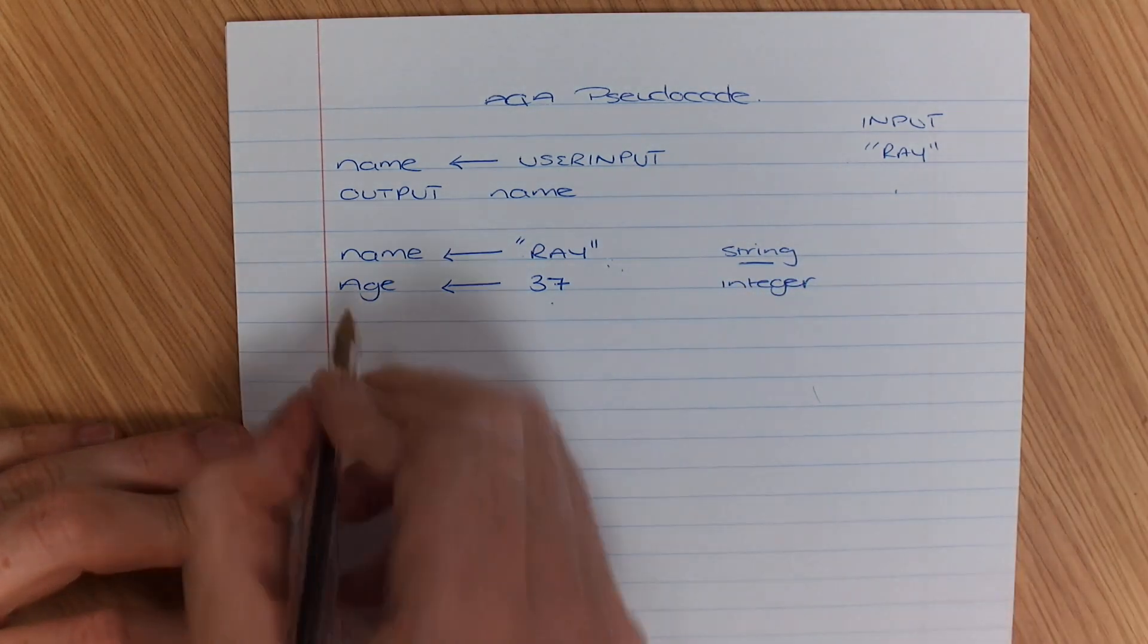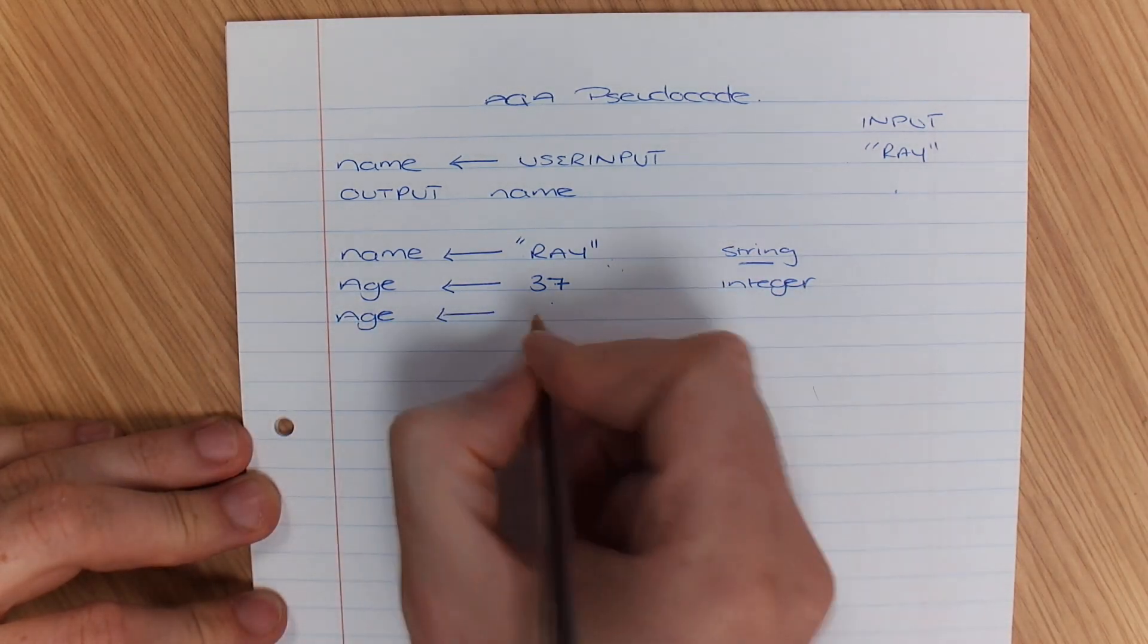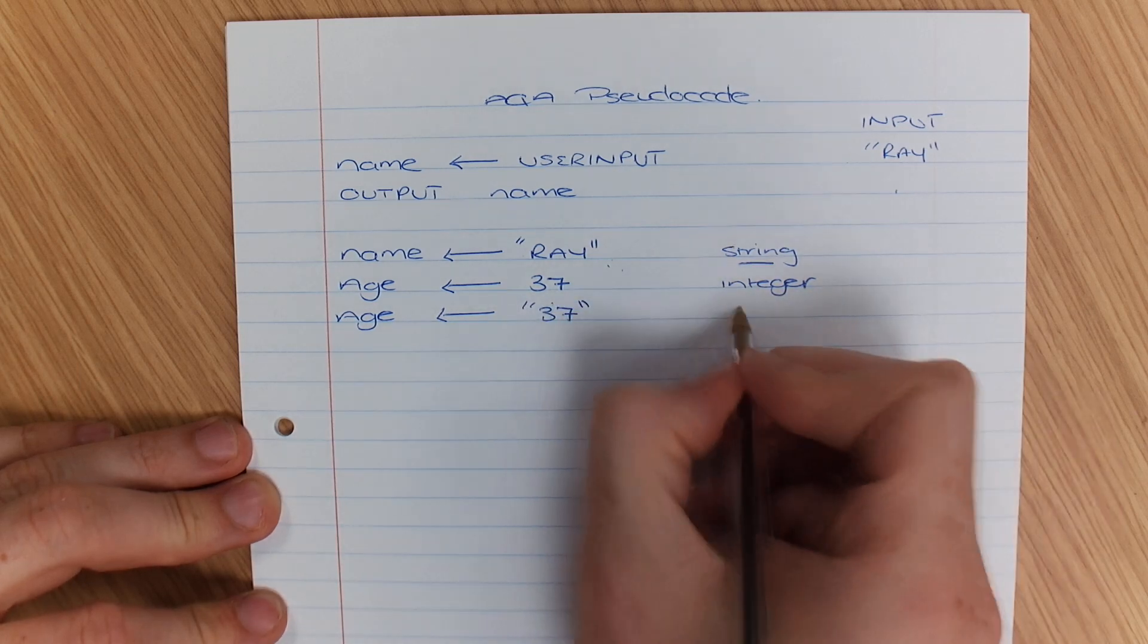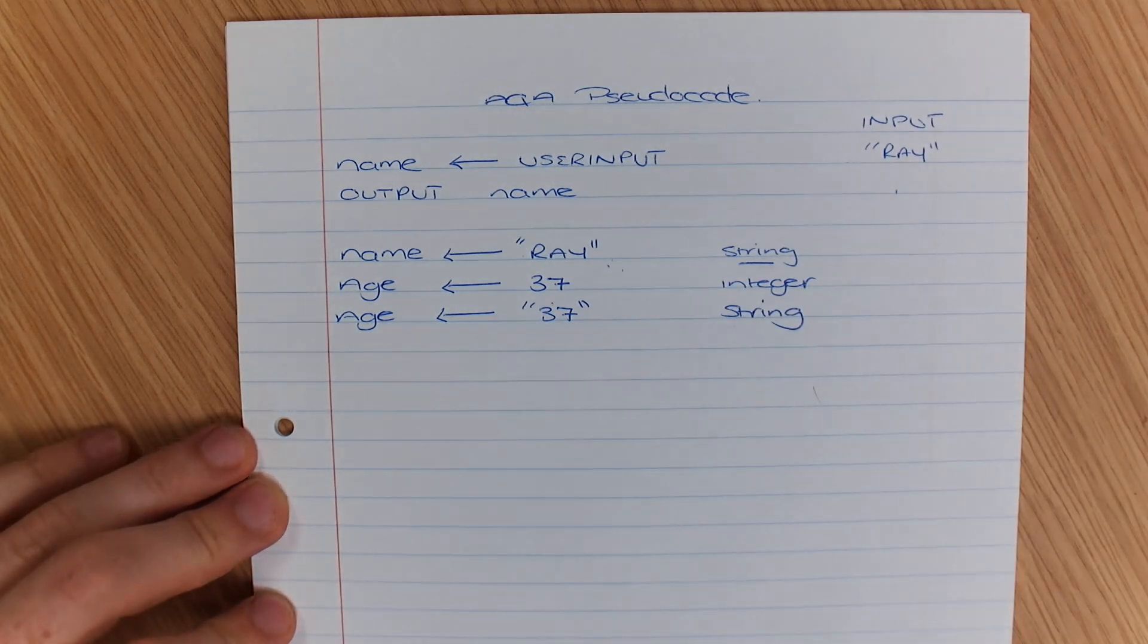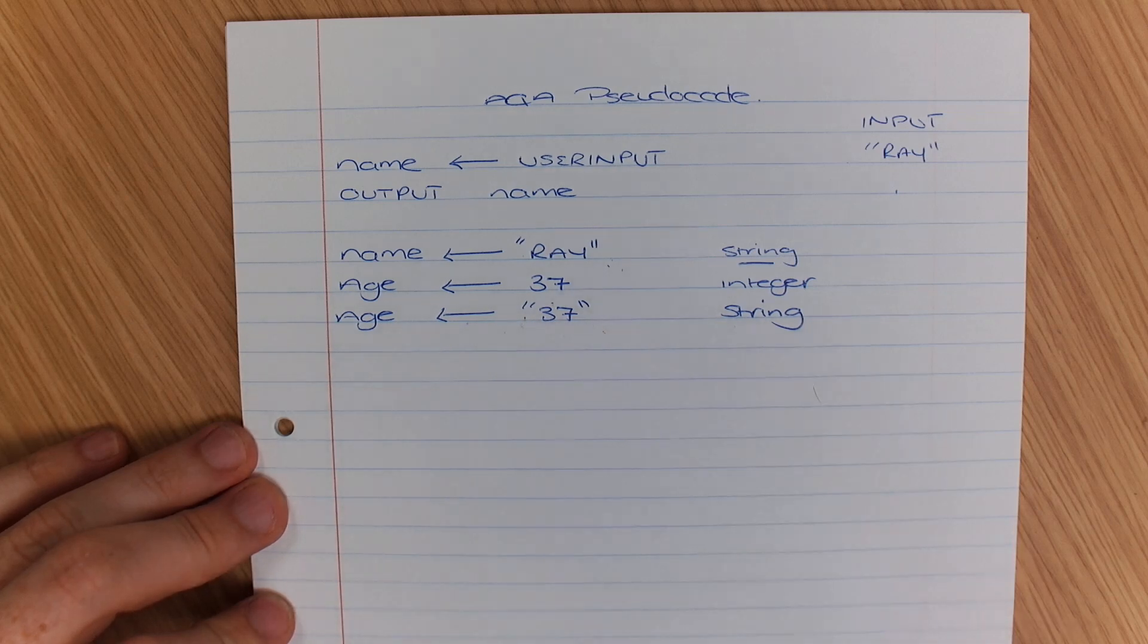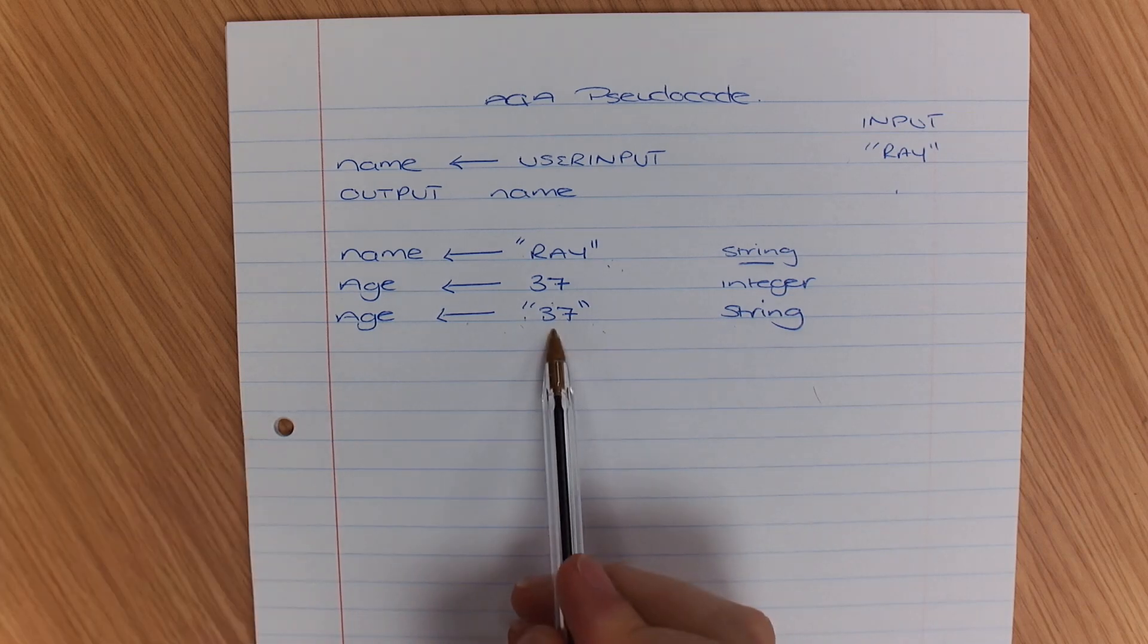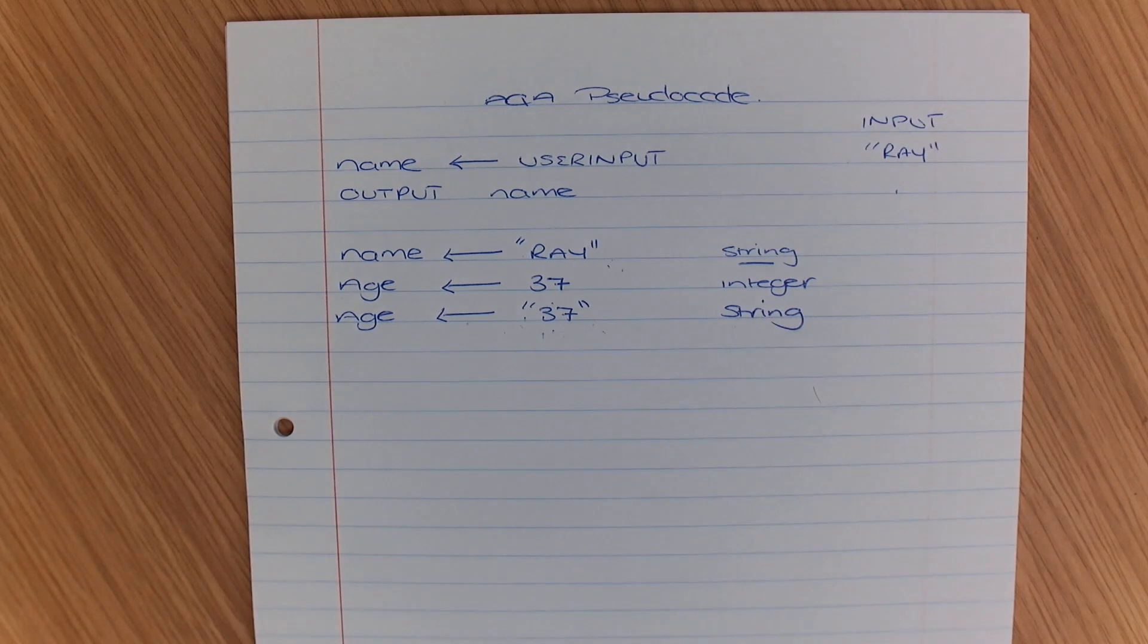Following on from that, if I decided I wanted age to be 37 in quotes, that would make it a string. Am I making sense so far? Yes, sir. So remember, the arrows are an assignment. Depending on how it appears, that's whether it's a string or whether it's an integer. Now, if I needed to convert this, I'm going to need to do a conversion.